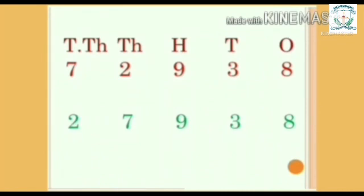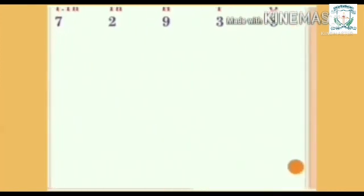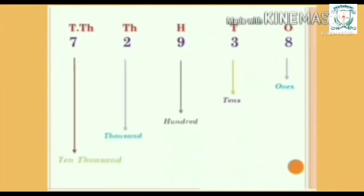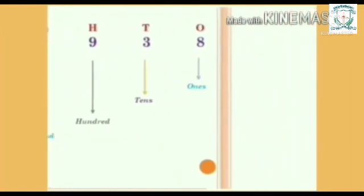We read it as 72,938 and 27,938. Let us know the place of each digit. 8 is in 1's place, 3 is in 10's place, 9 is in 100's place, 2 is in 1000's place, and 7 is in 10,000's place.